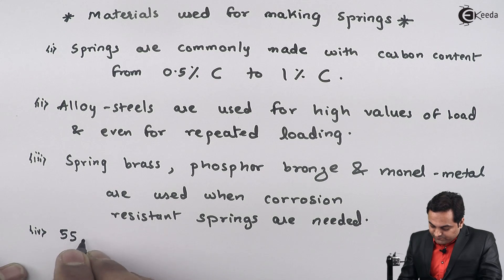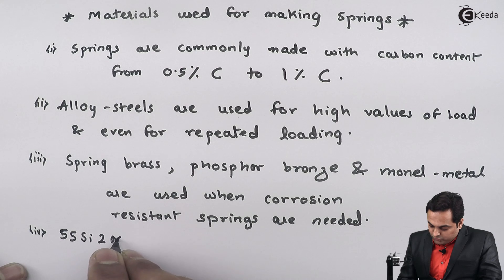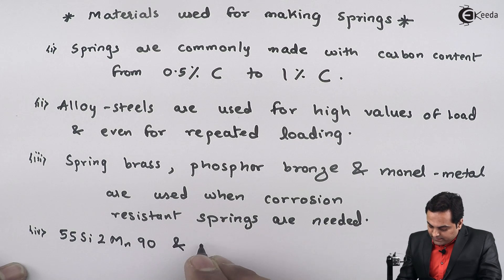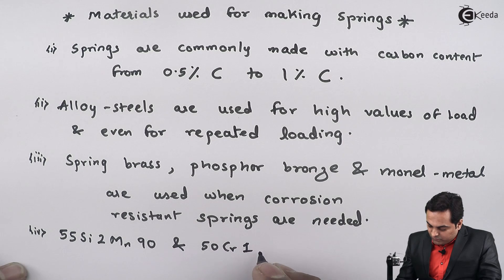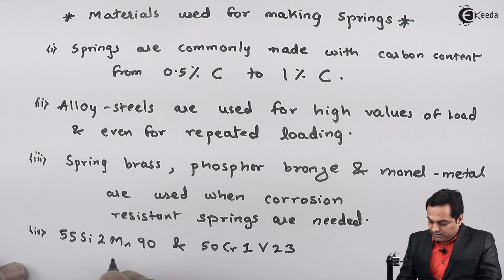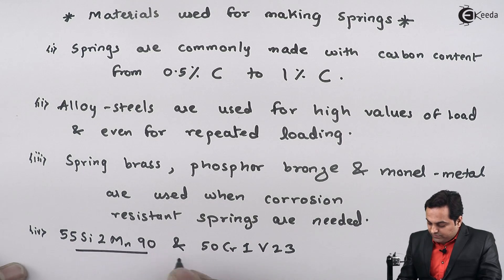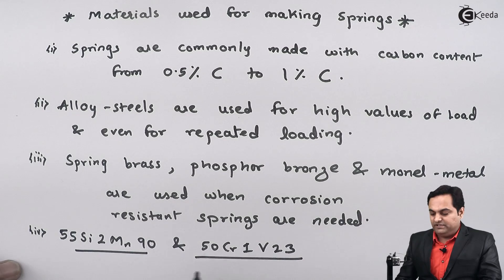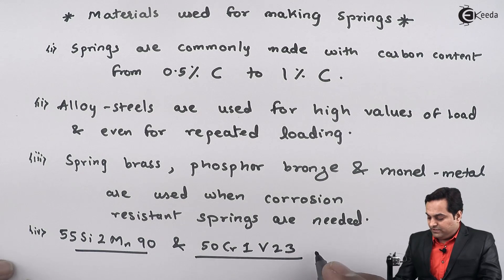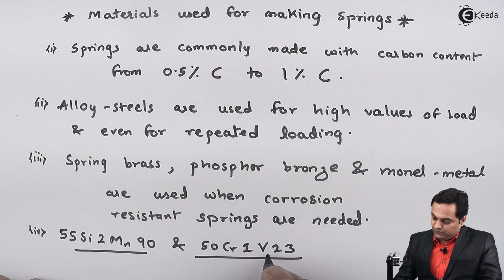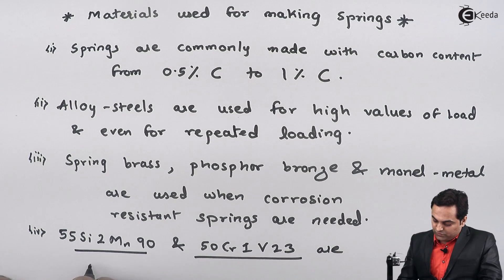Then we have 55Si2Mn90 and 50Cr1V23. These two materials are the most commonly used for springs.